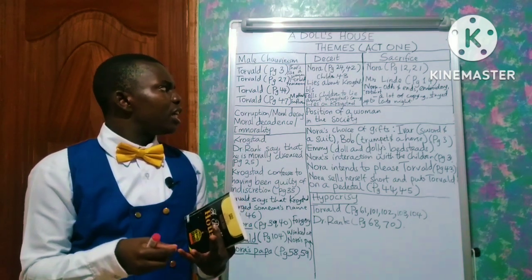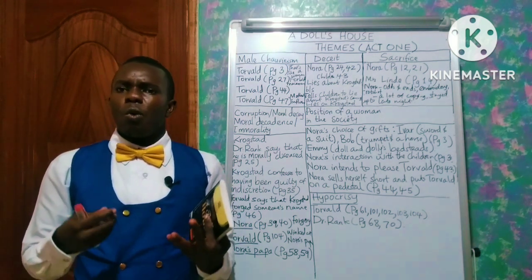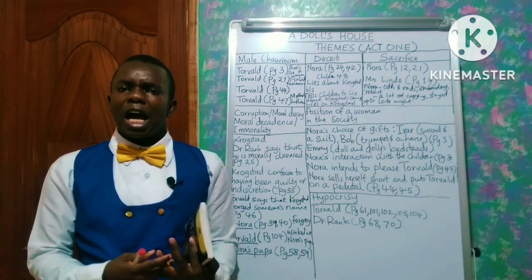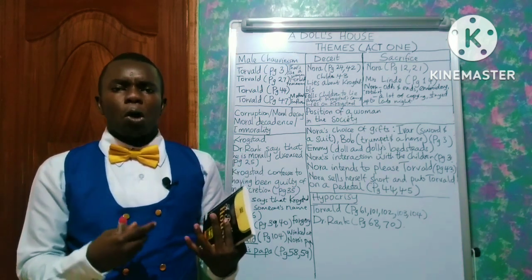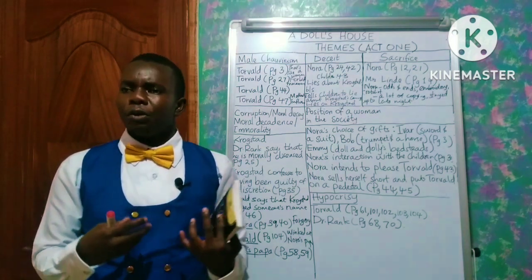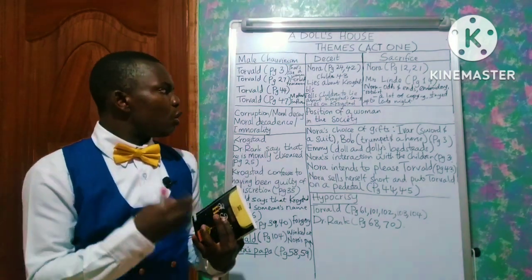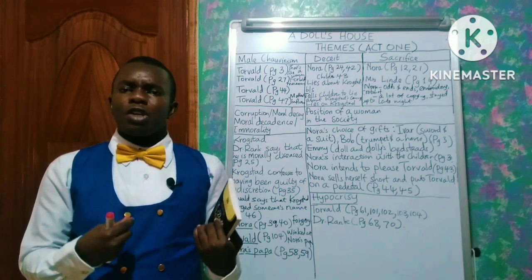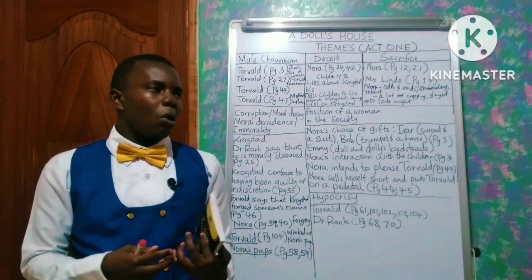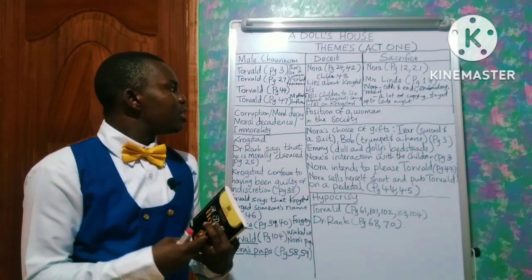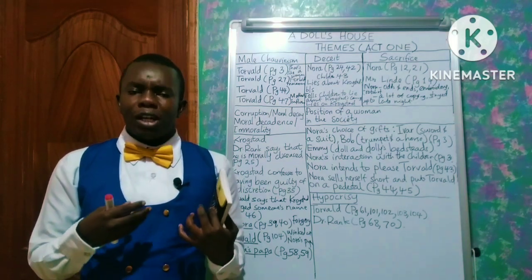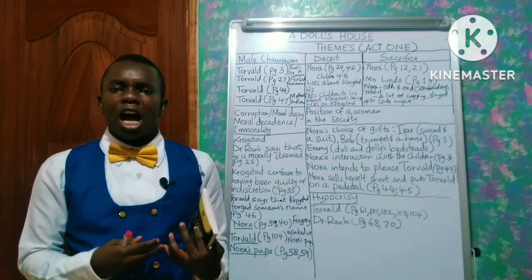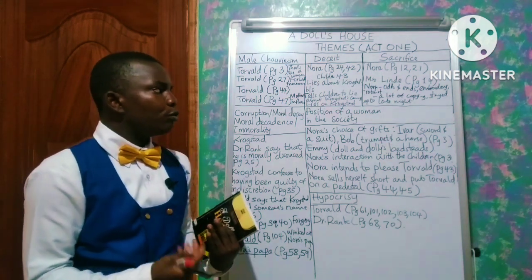For instance, on page 3, there is an instance of male chauvinism where Torvald tells Nora that her opinion on borrowing money and taking debts is that of a woman. Then on page 27, the same text, it is evident that Torvald has forbidden macaroons, and that brings about the domineering or authoritarian kind of influence he has on Nora. Again, this is seen on page 47 where Torvald tells Nora that those who have gone under during their early days have been as a result of the bad influence of a mother.